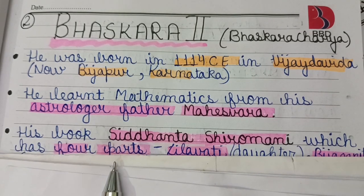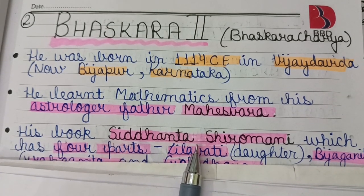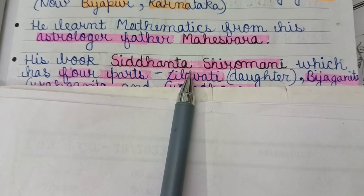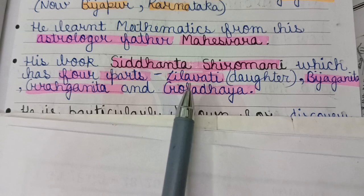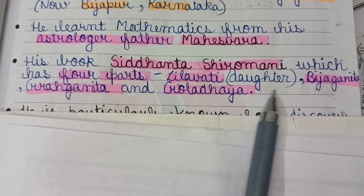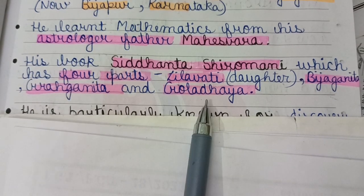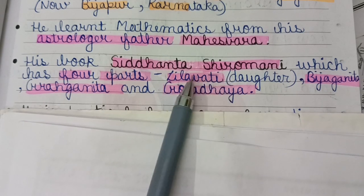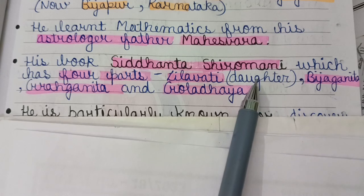His book is Siddhanta Siromani, which has four parts: Leelavati, Bijaganita, Grahaganita, and Goladhyaya. The Leelavati book is named after his daughter.